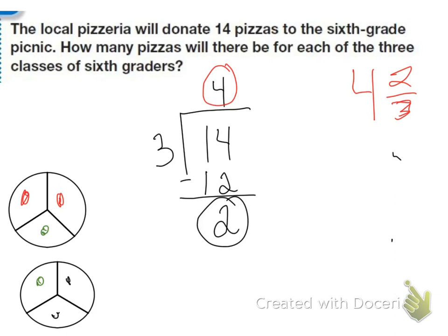Now we also know that because my remainder becomes my numerator and the denominator is the number I'm dividing by. So 3. So 4 and 2 thirds.